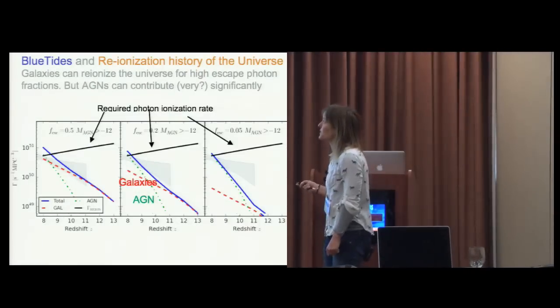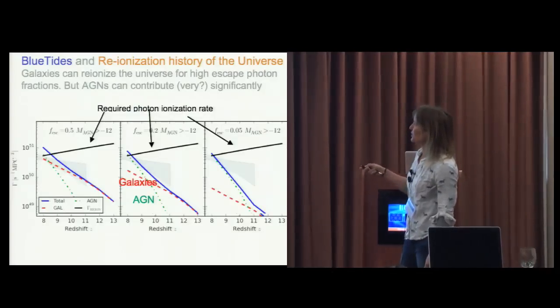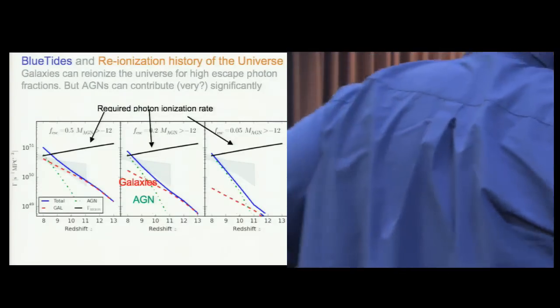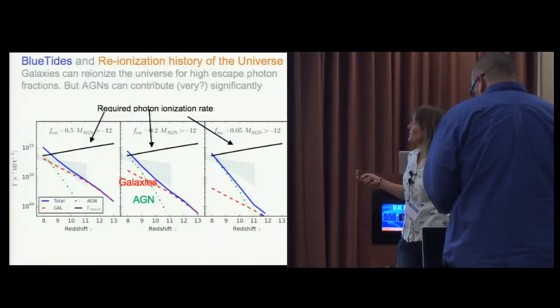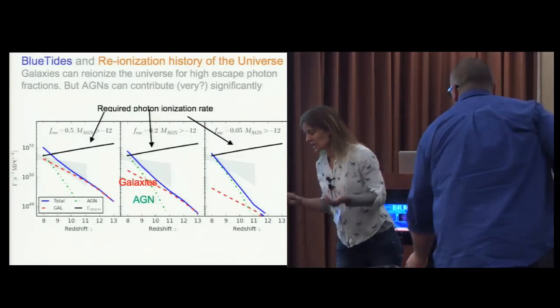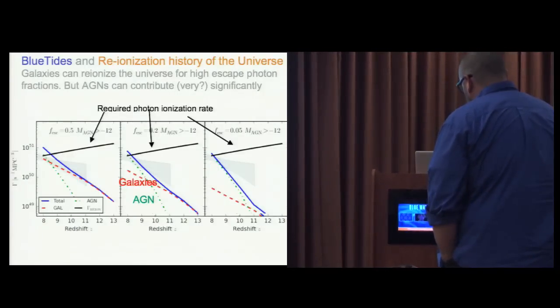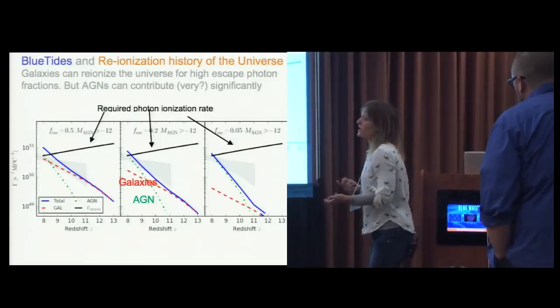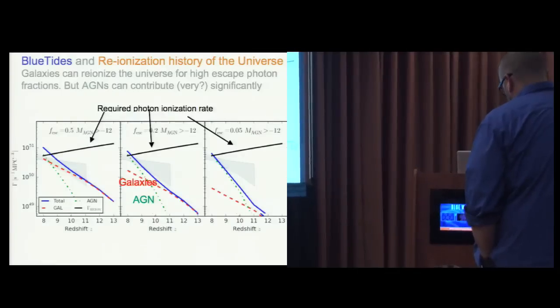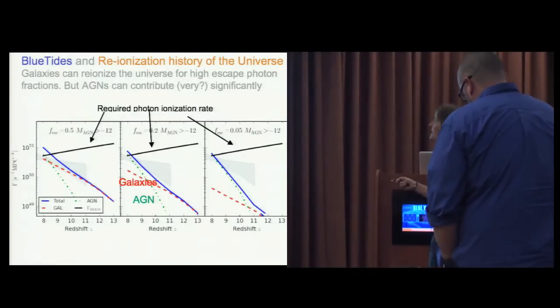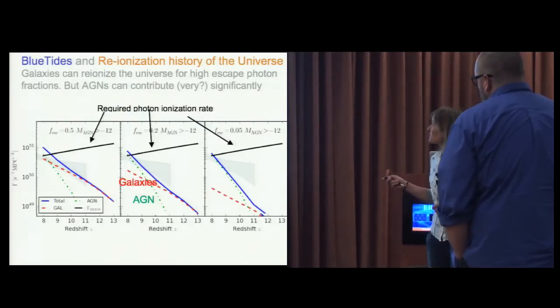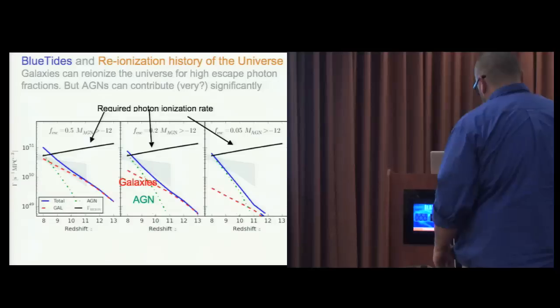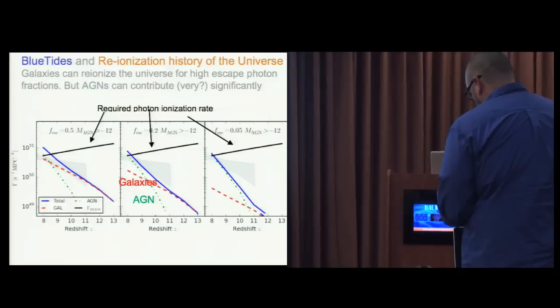The main question is what actually does the reionization - where are most of the photons coming from? They're coming from galaxies and probably these quasars, but what fraction is being contributed by what? This is the total photons required, and this is the number of photons required as a function of redshift to do the reionization. This is the contribution from galaxies and AGN for different assumptions for how many photons actually escape. The conclusion from the BlueTides simulation is that you can definitely reionize the universe with galaxies, but it's borderline. In some assumptions AGN will contribute very significantly if not more. Currently the requirement is that photons from galaxies have to escape with a very large fraction, otherwise AGN are going to have to contribute more.